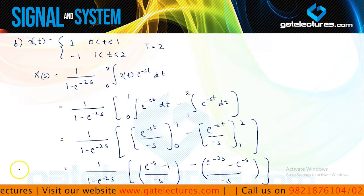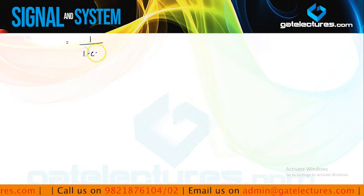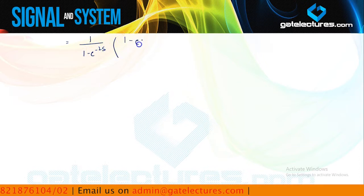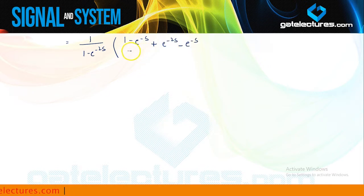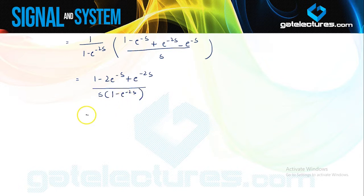Since the denominator for both terms is the same, I can add them. Simplifying, inside the bracket I get 1 minus e to the power minus s plus e to the power minus 2s minus e to the power minus 2s minus e to the power minus s, all over s. This can be written as 1 minus 2 e to the power minus s plus e to the power minus 2s, over s times (1 minus e to the power minus 2s). Factorizing the numerator gives (1 minus e to the power minus s) squared.